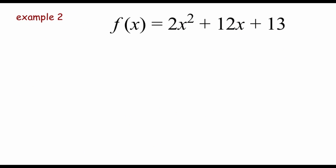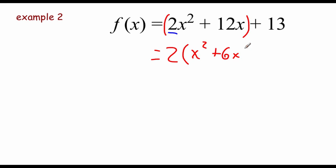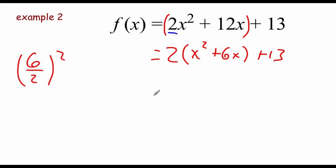Our next example: f of x equals 2x squared plus 12x plus 13, and we're going to complete the square again. Remember the a value out in front has to be a 1 before we can complete the square, so we need an extra step. The first two terms have a GCF of 2, so we can rewrite this as 2 times x squared plus 6x, plus 13. Now with an a value of 1 inside, we focus on the b value and go b divided by 2 squared — 6 divided by 2 is 3, and 3 squared is 9.